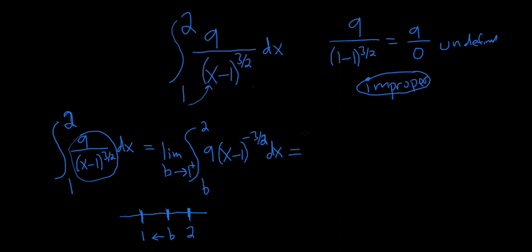So this is equal to the limit as b approaches 1 from the right. The 9 hangs out. We have x minus 1. Negative 3 halves plus 1 is really negative 3 halves plus 2 halves, so that's negative 1 half. So negative 1 half. And when we divide by negative 1 half, we really multiply by negative 2. So I'm going to put a negative 2 here. And we're going from b to 2. Getting really messy here.